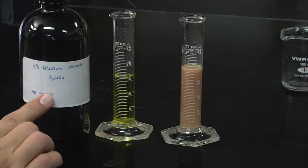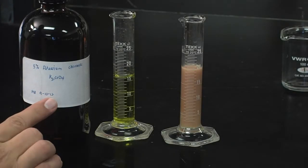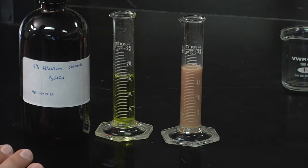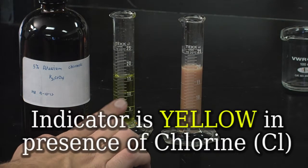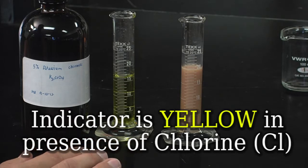We will be using potassium chromate indicator, which measures the concentration of chlorine ions to help us determine our endpoint. Potassium chromate indicator turns yellow in the presence of chlorine.